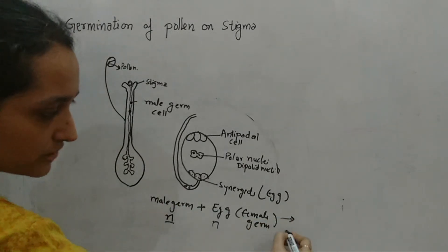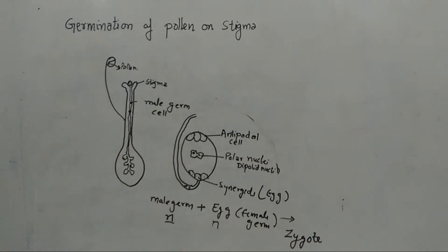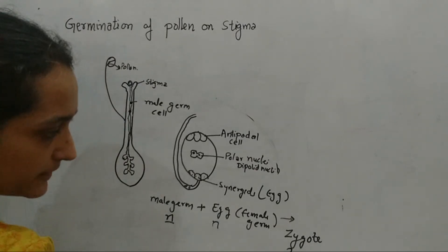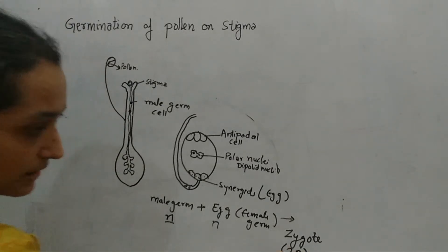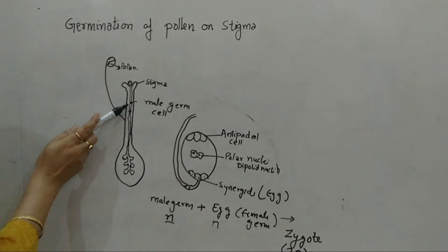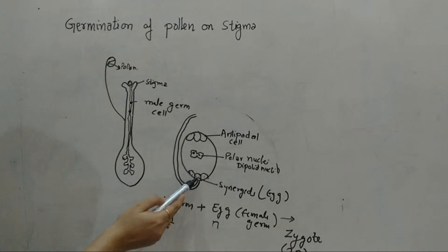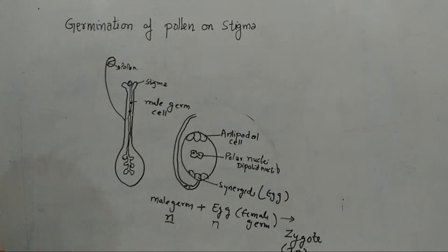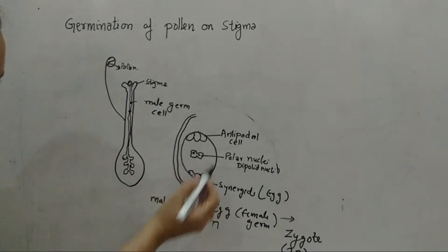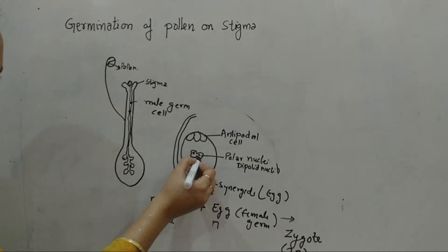The fusion of the male and female gamete leads to the formation of a zygote, which is 2n in number. So first the male germ cell travels down and is released, and the synergids react to form the zygote. The second male germ cell will then react with the polar nuclei.